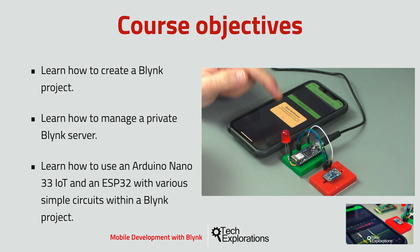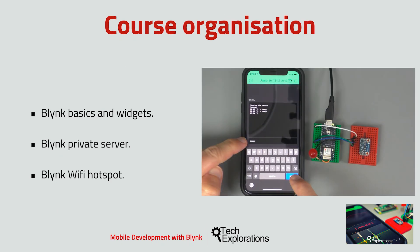Now let's have a look at the course organization. This course is organized in three main parts. In the first part, you learn the basics of mobile development on the Blynk platform, including creating an account on the cloud server, building your first Blynk project, and learning how to use most of the available widgets. In the second part, you learn how to install, configure, and manage a Blynk private server using the Raspberry Pi Zero W as a low-cost but efficient host. In the third part, you learn how to set up your Raspberry Pi Zero as a Wi-Fi hotspot, so your Blynk server can operate in total independence of other networks, letting you connect your devices and phone in places where there are no other connectivity options.